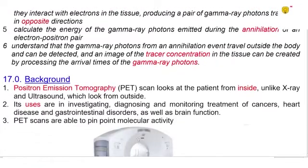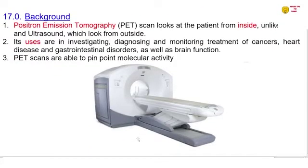Now so we're going to lay a background to this positron emission tomography. Positron emission tomography PET scan looks at the patient from the inside unlike x-ray and ultrasound or other methods of scanning which look from the outside. In this one a patient is going to be injected with a glucose based radiotracer which is then absorbed by the body and then the analysis is going to be done. The uses are in investigating diagnosing and monitoring treatment of cancers, heart disease and gastrointestinal disorders as well as brain function. PET scans are able to pinpoint molecular activity at that particular point where the cancer is.